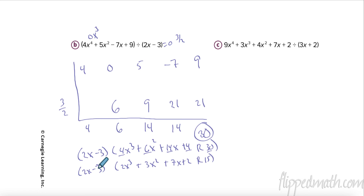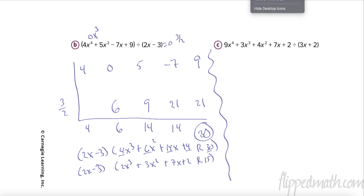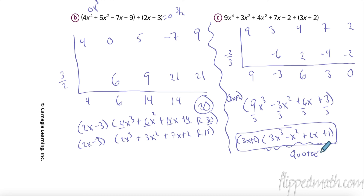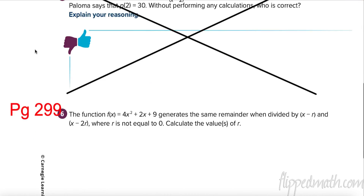Try this next one yourself — pause the video and try it. I divided by negative 2/3, adding down and multiplying up. I got 9x cubed minus 3x squared plus 6x plus 3, but 3 times 9 is 27 — way over — so I divide by 3 again: 3x cubed minus x squared plus 2x plus 1. That's the quotient. Sometimes they want you to write it as: dividend equals divisor times quotient, because multiplying divisor times quotient should give back what you started with.